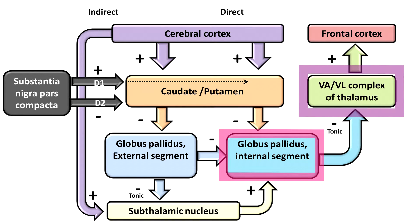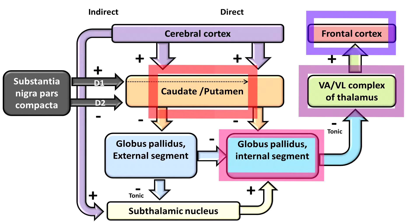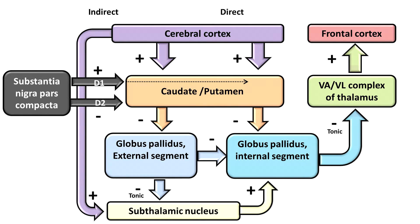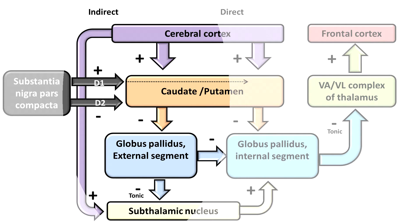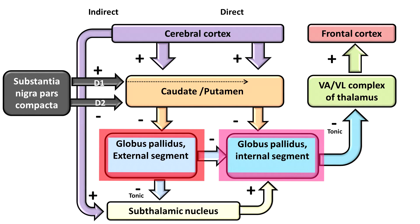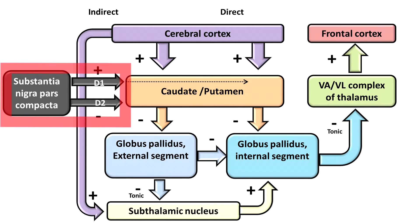Thus the main output of the basal ganglia is inhibitory, which due to disinhibition allows upper motor neurons to initiate lower motor circuits for movements. However, the cerebellum contributes by giving excitatory input to the ventral lateral nucleus of the thalamus. The indirect pathway antagonizes the activity of the direct pathway by increasing the level of constant inhibition from the internal segment of the globus pallidus. Dopamine also acts on the basal ganglia: the D1-like receptors enhance excitatory responses, whilst D2-like receptors enhance inhibitory responses.